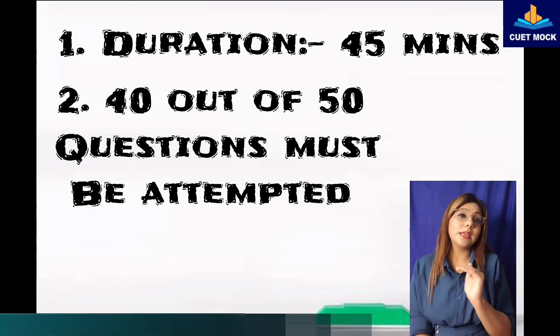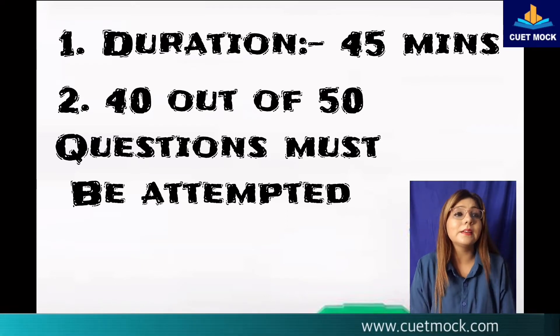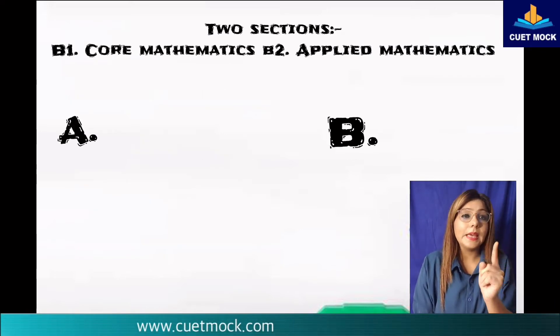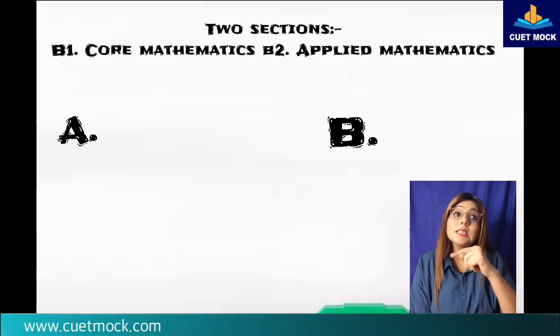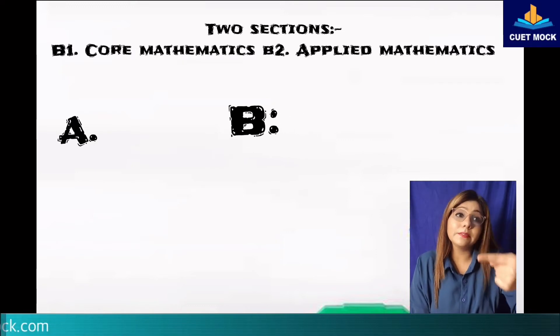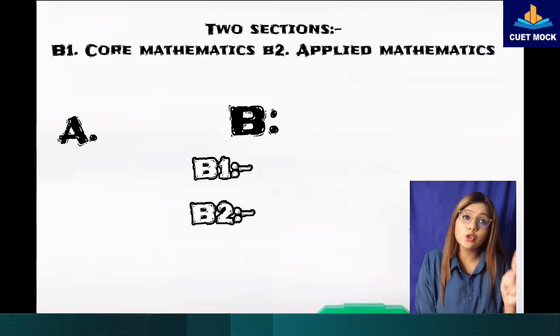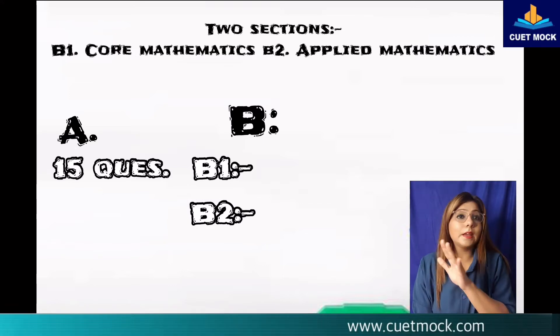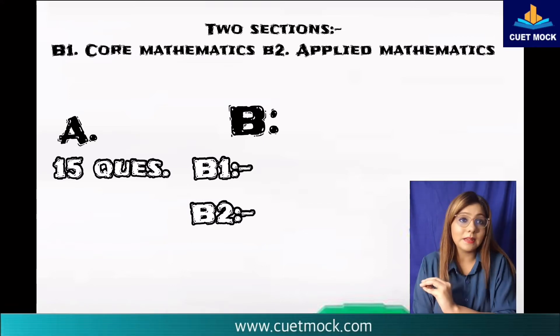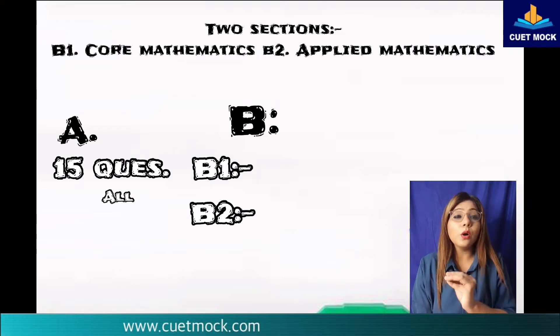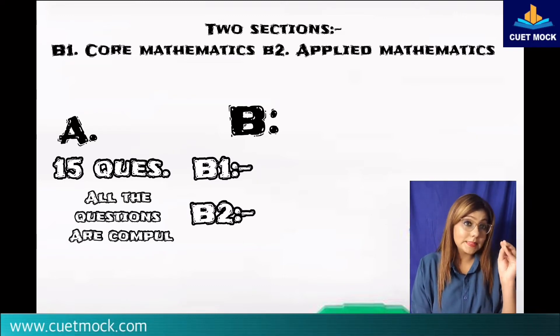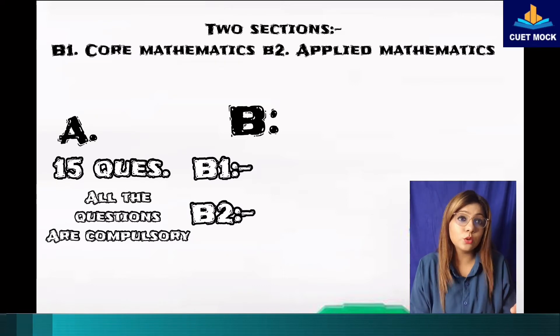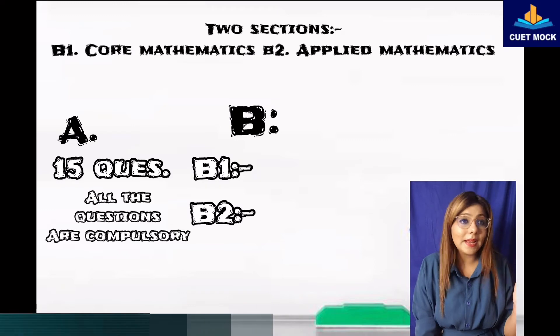In some subjects like mathematics or applied mathematics, there will be two sections, section A and section B. Section B is further subdivided into section B1 and B2. Section A of mathematics will have 15 questions covering both mathematics and applied mathematics in which all the questions are compulsory. In section A you have to answer all the questions. There is no choice between mathematics and applied mathematics.